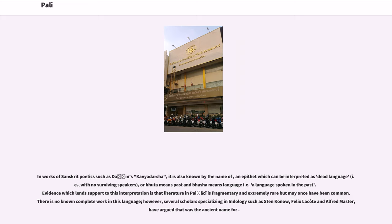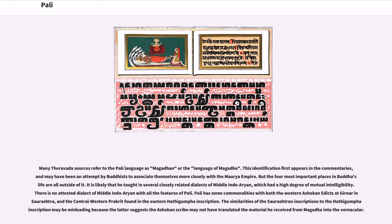In works of Sanskrit poetics such as Dandin's Kavyadarsha, Pali is also known by an epithet which can be interpreted as 'dead language' — where Bhuta means 'past' and Bhasha means 'language,' i.e., a language spoken in the past. Evidence supporting this interpretation is that literature in Pali is fragmentary and extremely rare, though it may once have been common. There is no known complete work in this language; however, several scholars specializing in Indology, such as Sten Karnow, Felix Lokote, and Alfred Master, have argued that Pali was the ancient name for this language.